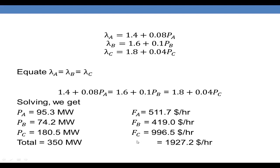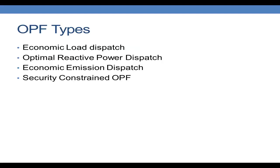We can also implement optimal load flow in ETAP with various constraints. There are different types of optimal power flow. In economic load dispatch we consider only economic factors such as fuel cost and energy price from the grid. In optimal reactive power dispatch we try to minimize reactive power. In economic emission dispatch we consider emission as a constraint to reduce. And in security-constrained dispatch we take various contingencies into consideration.